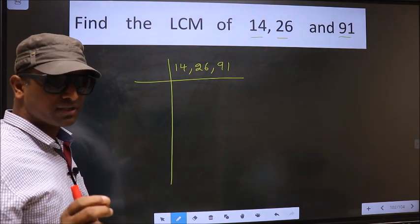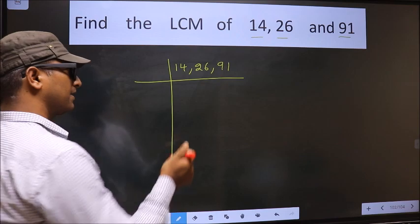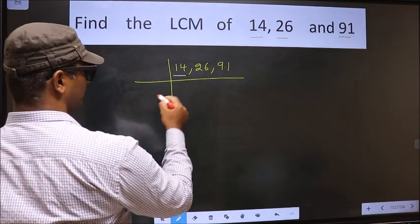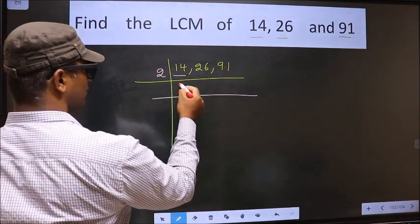Now we should focus on the first number. That is 14. 14 is 2 times 7 is 14.